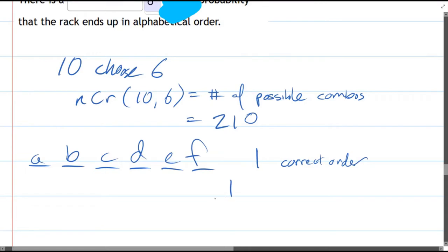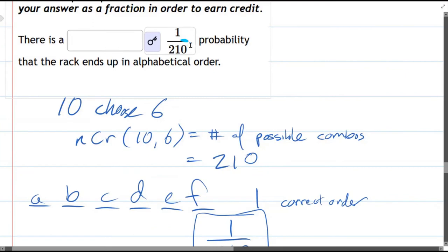Which means we have one favorable outcome out of 210 total outcomes. And this is our probability right here. So it's one favorable divided by the total.